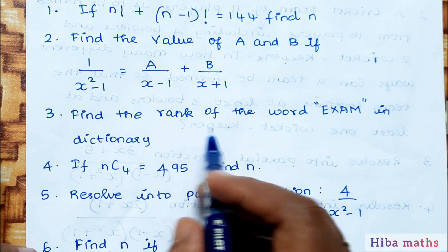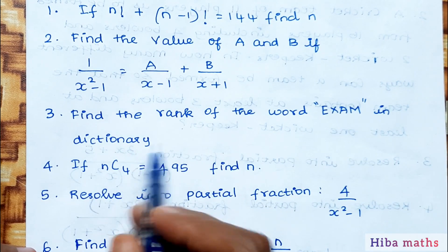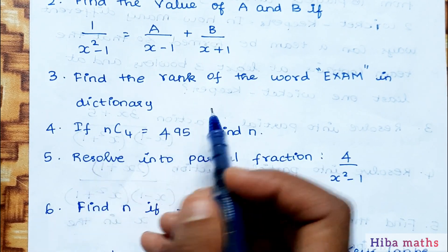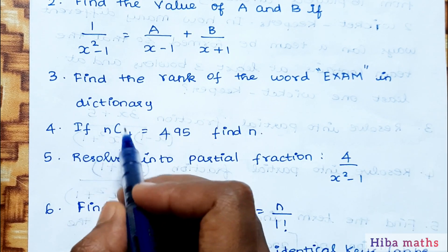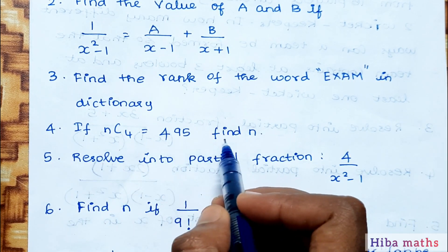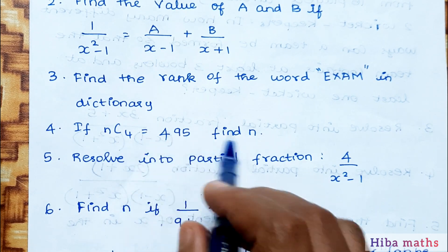Third question: find the rank of the word EXAM in dictionary. We need to practice many such word problems. Fourth question: if nC4 is equal to 495, find n. When nCr value is given, use the formula.